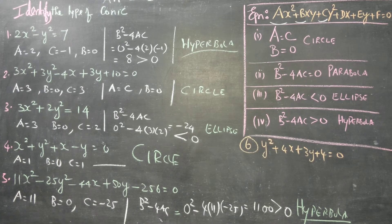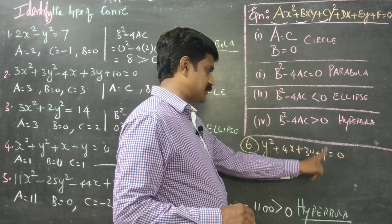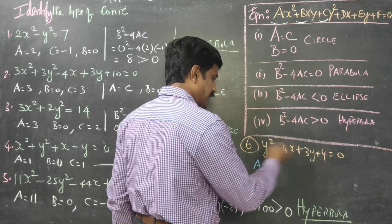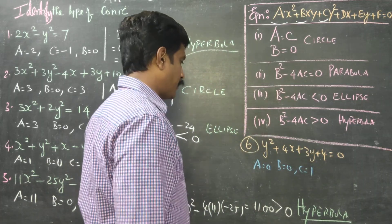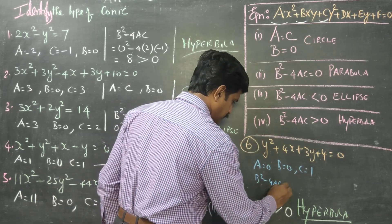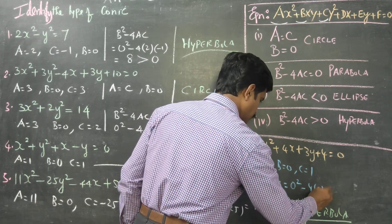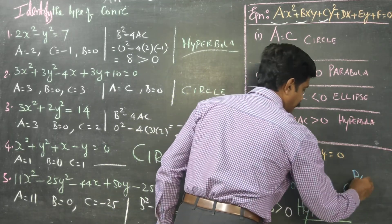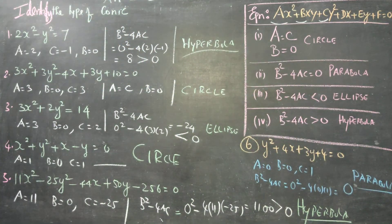The last sum, number 6, is: y squared plus 4x plus 3y plus 4 equals 0. There is no x squared term, so capital A equals 0. There is no xy term, so b equals 0. The y squared term gives c equals 1. Finding b squared minus 4ac: 0 squared minus 4 into 0 into 1 equals 0. Since b squared minus 4ac equals 0, it is a parabola.